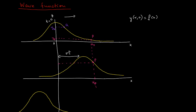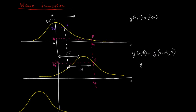We can write that y at position x at time t should equal the y position that is x minus vt distance away — as you can see, the separation between these two points is also vt — so y at (x minus vt) at time zero. In general, we write y(x, t) = f(x - vt). This is the wave function when the pulse is moving to the right with velocity v.